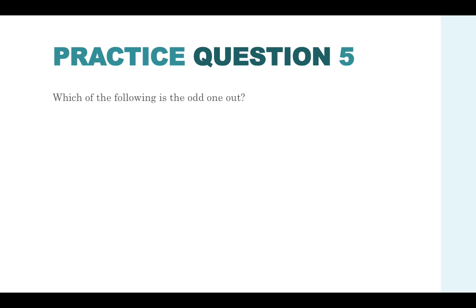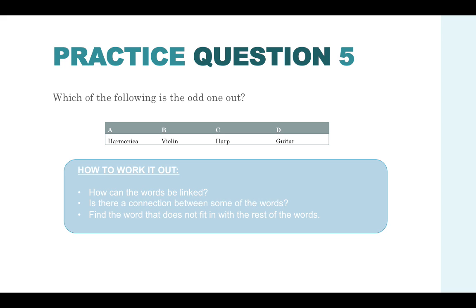Practice question five. Which of the following is the odd one out? We've got A, harmonica. B, violin. C, harp. D, guitar. Now you know that all of these words are linked because they're all musical instruments. Is there a connection between some of the words and find the word that does not quite fit in with the rest of the words.